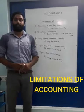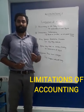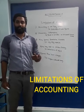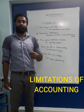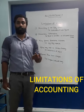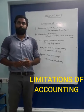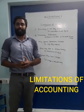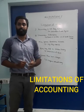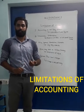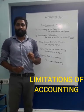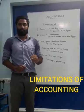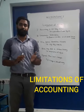The first limitation is that accounting is not fully exact. Even though we prepare accounts based on evidence, we estimate some amounts to calculate profit or losses. For example, when purchasing machinery, we estimate that the machinery will work for 10 years — this is only an assumption. According to this assumption, we divide the value of the machinery over 10 years for depreciation.